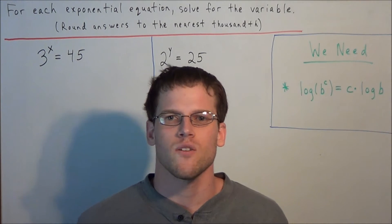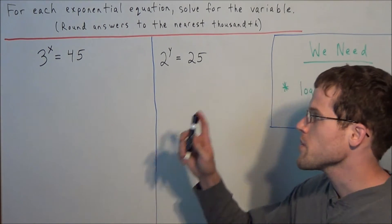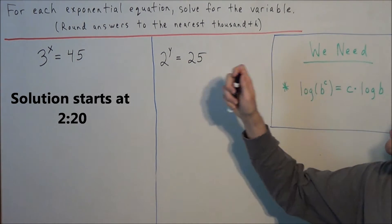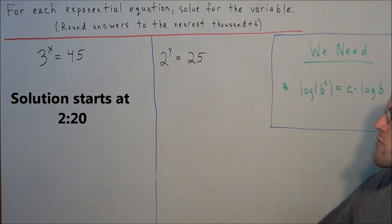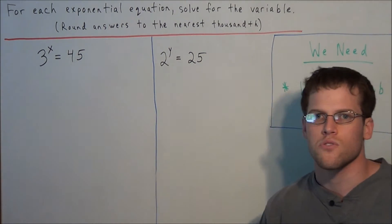Hi, my name is Vincent and today I want to take a look at solving exponential equations using logarithms. So we have for each exponential equation solve for the variable and we want to round all of our answers to the nearest thousandth. We have 3 to the x equals 45, and we also have 2 to the y equals 25.